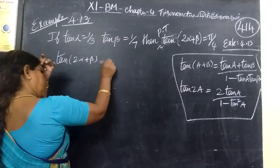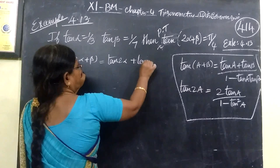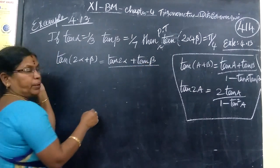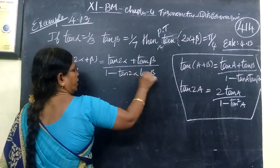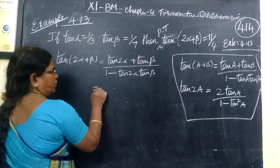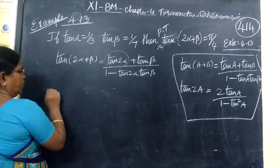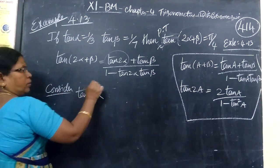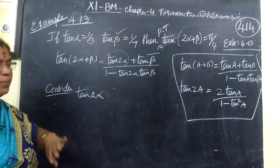That means tan(2α + β) equals tan 2α plus tan β by 1 minus tan 2α tan β. Same formula we are using. Instead of a, 2α. Instead of b, β. So first tan 2α - we are finding tan 2α.